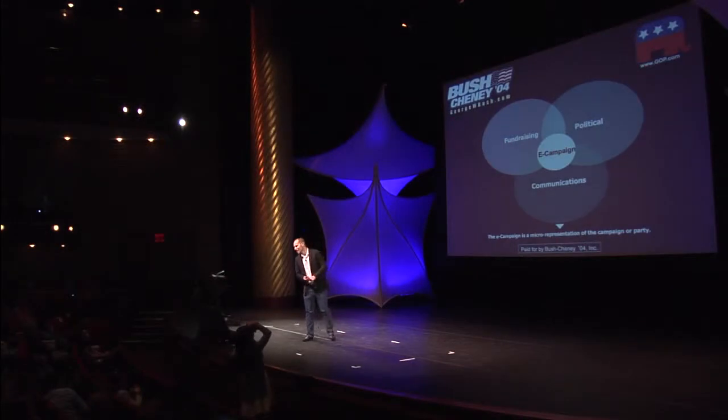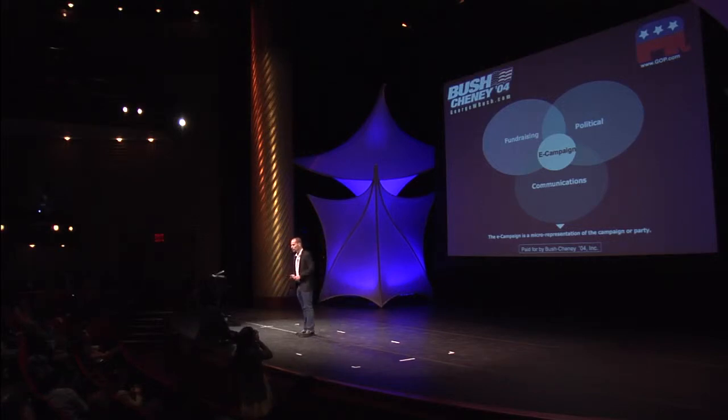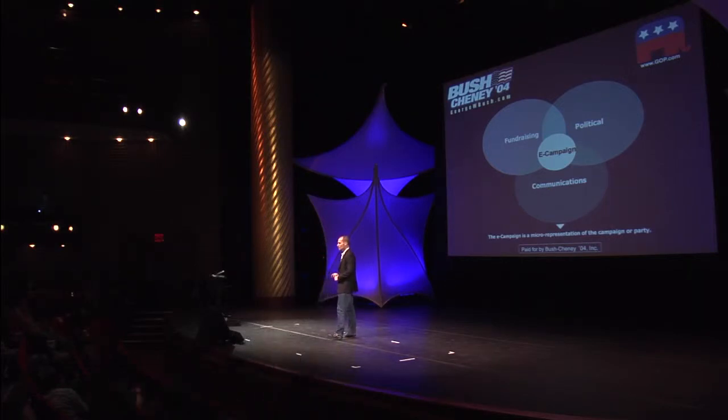The challenge of how do we integrate technology into an organization was one that we thought about very extensively back then and continue to think about today. In this super-secret internal campaign strategy document from ten years ago, we reveal how we actually thought of it. Right at the bottom — the e-campaign, kind of a dorky title we've gotten away from — is a micro-representation of the campaign or party. The idea was we were going to replicate everything you could do offline in an online experience.